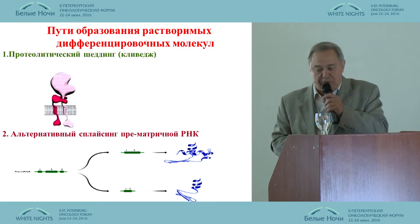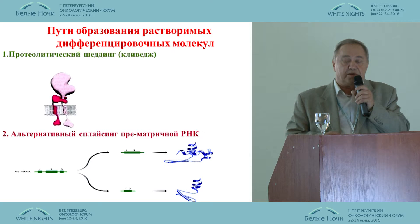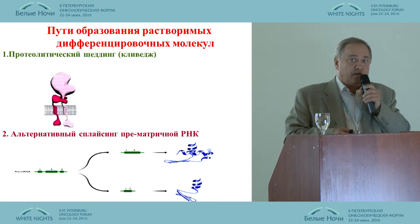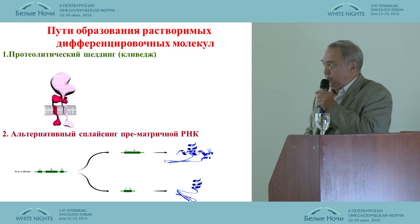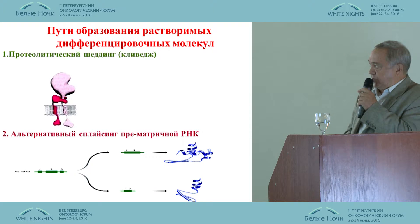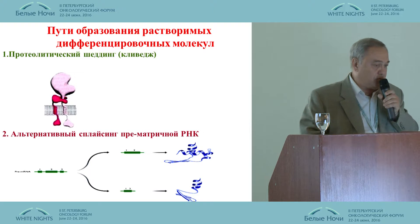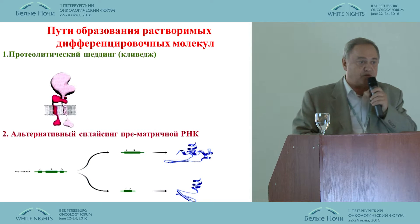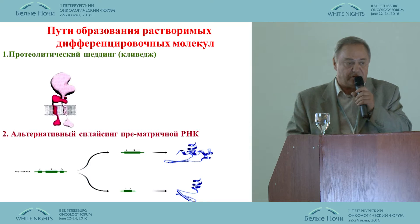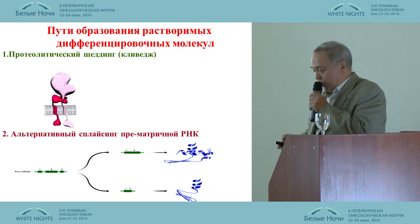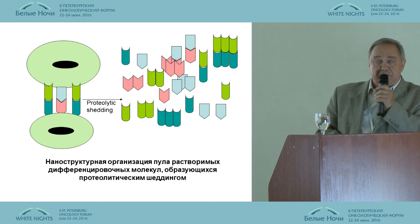Those molecules in their function are similar to cytokines — I think they overlap. Part of cytokines are sometimes called soluble differentiating molecules as well. The second way by which those differentiating molecules can occur is by means of alternative splicing of pre-mRNA. So it is a targeted formation of a soluble form of a molecule, and quite often it happens in parallel with the membrane form formation. In parallel we have both forms, each meant to play its own role in the immune response.